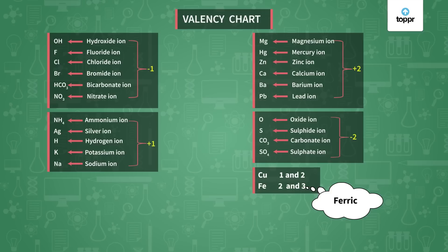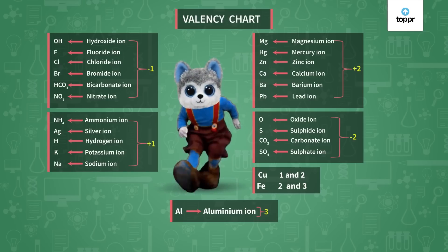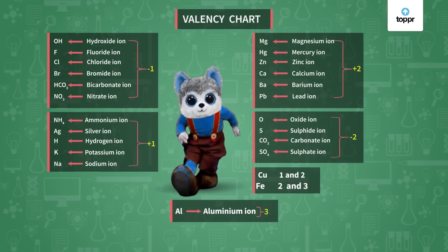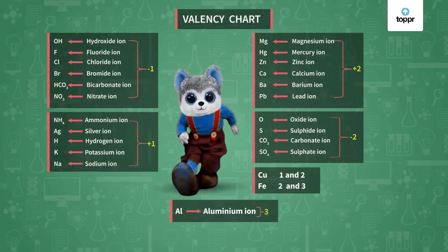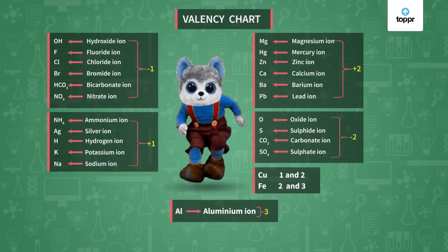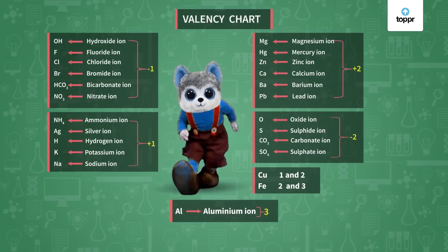The last one we have is aluminium. This group can be sung like this: Copper 1, 2 — iron 2, 3 — iron 2, 3 — iron 2, 3 — copper 1, 2 — iron 2, 3 — aluminium 3.